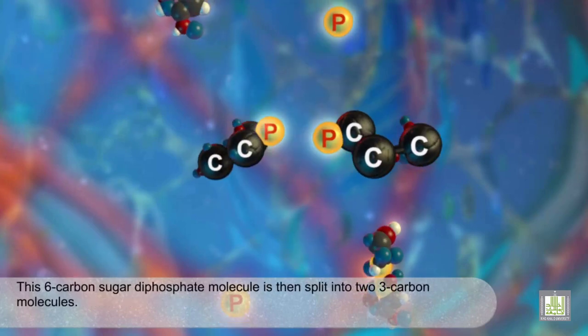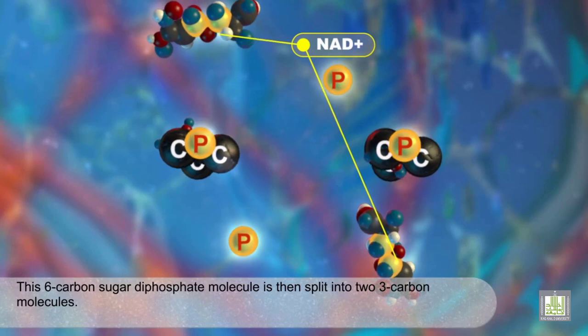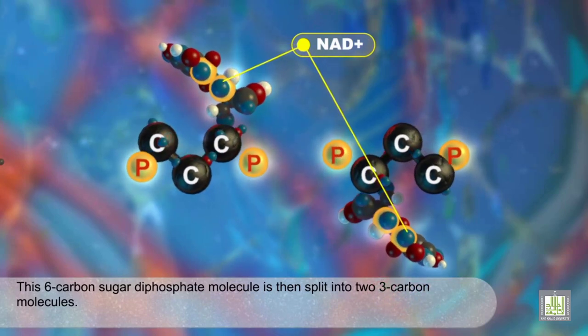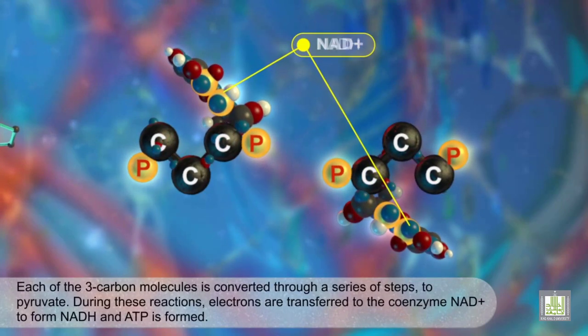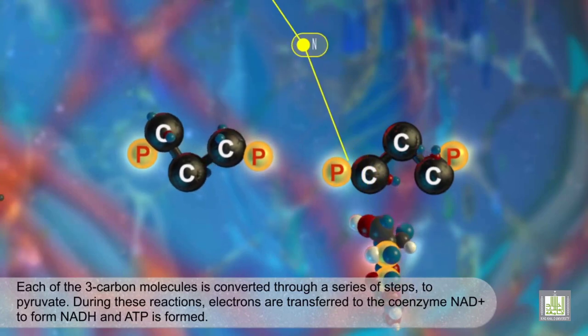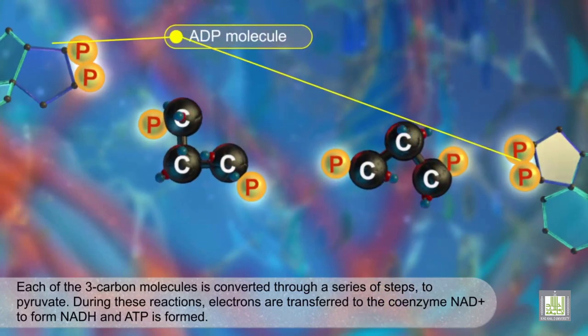This six-carbon sugar diphosphate molecule is then split into two three-carbon molecules. Each of the three-carbon molecules is converted through a series of steps to pyruvate.